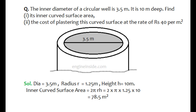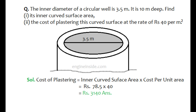For calculating the curved surface area, we use the formula 2πrh. Replacing the values of r and h, we get the value of inner curved surface area as 110 meter square. In the second part, to find the cost of plastering the inner curved surface area, we multiply the curved surface area by the cost per unit area, which is 40. After replacing the values, the answer is rupees 3,140. For more such videos, keep watching and subscribe to our channel.